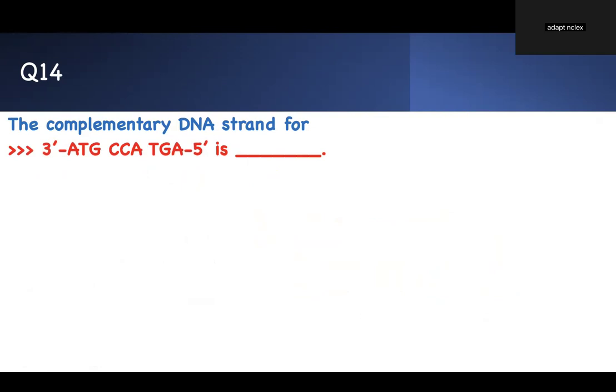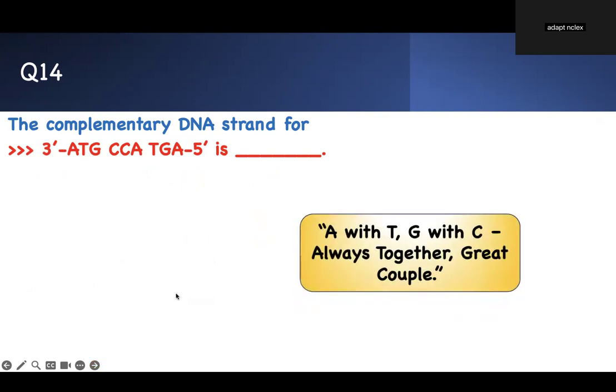The complementary DNA strand for 3'-ATG CCA TGA-5' is what? I give you one portion of the DNA and I give you the other. Don't memorize it. There's a keyword how to answer it. A with T and G with C. If you don't know that, there's a mnemonic. Always together. So A and T and great couple. Great couples are always together. Therefore, if A together, T always. G is great couple, C great. Write A together, T always, G couple. This is your right answer.